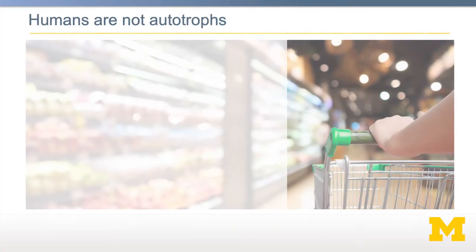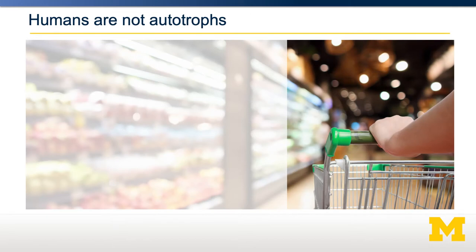Biologically, there are two main reasons why we need to eat. One is to get enough calories — enough energy to maintain our bodily functions. The second is to provide us with essential nutrients. In this video, we're going to focus on essential nutrients.